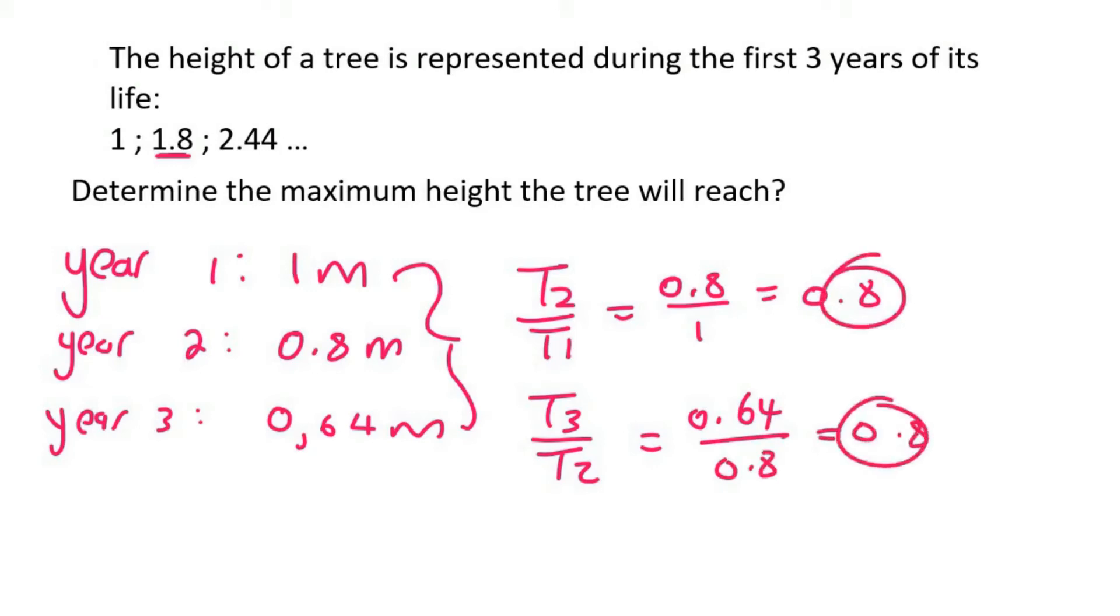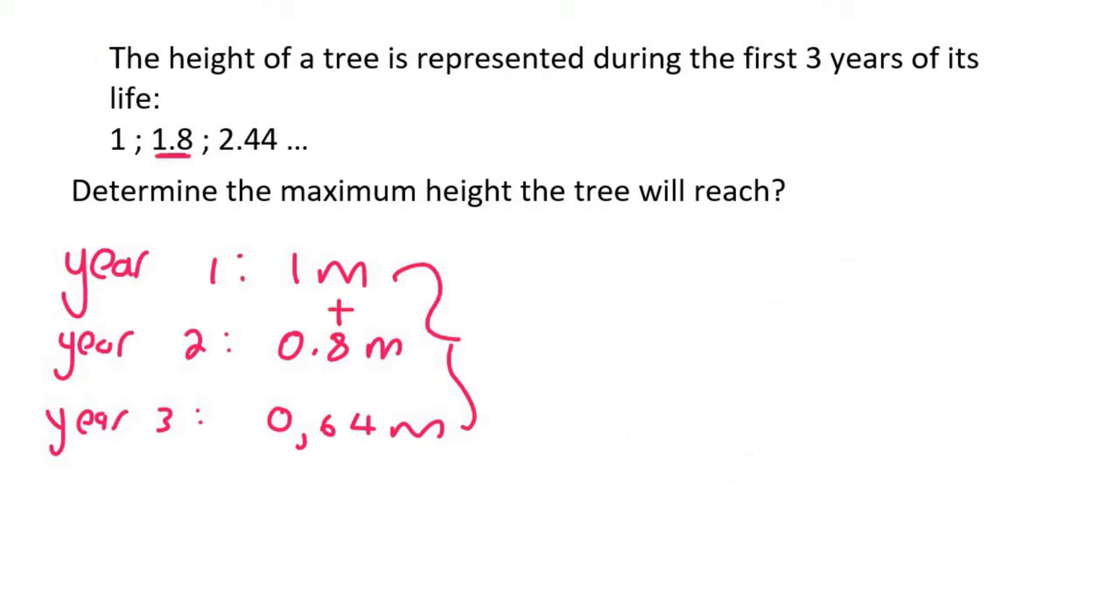So there is a constant ratio. So to work out the total height that the tree reaches, you would have to add these numbers together. You wouldn't add these numbers together. That would make no sense.